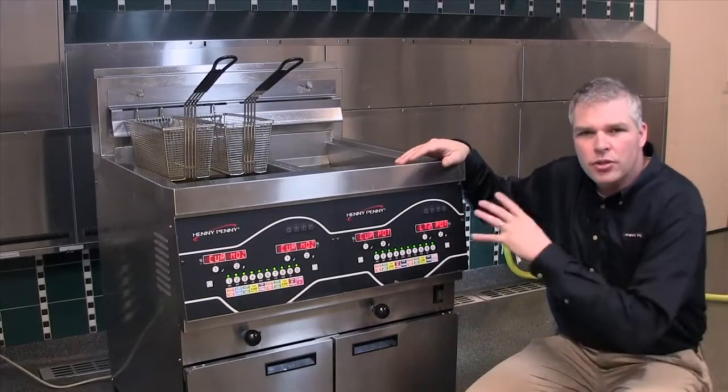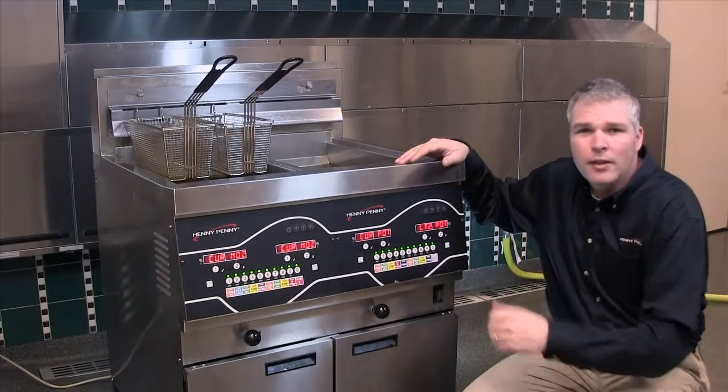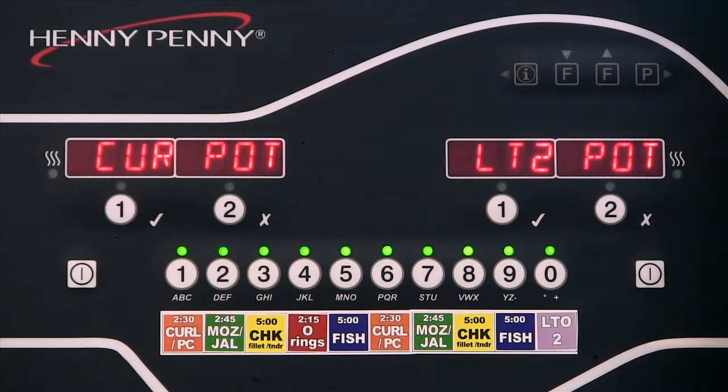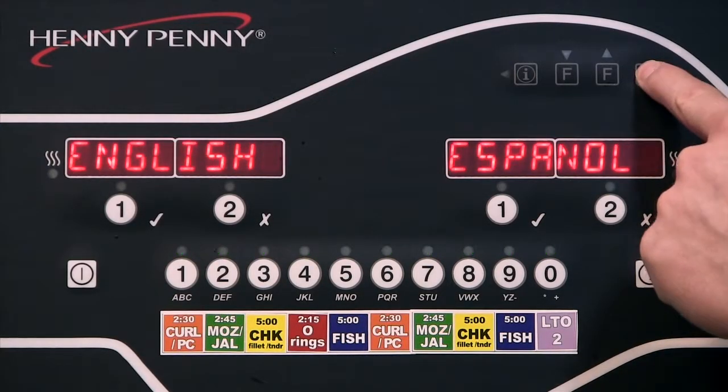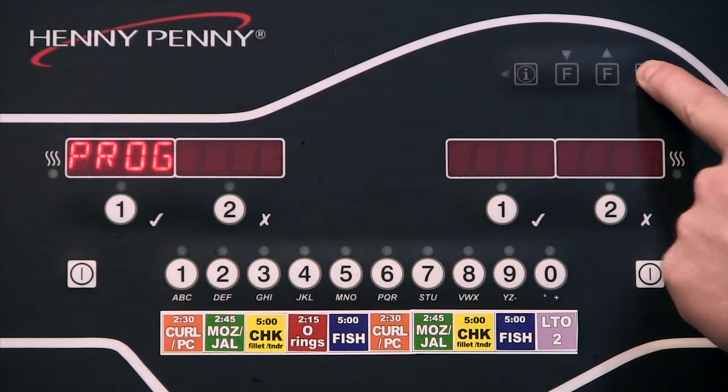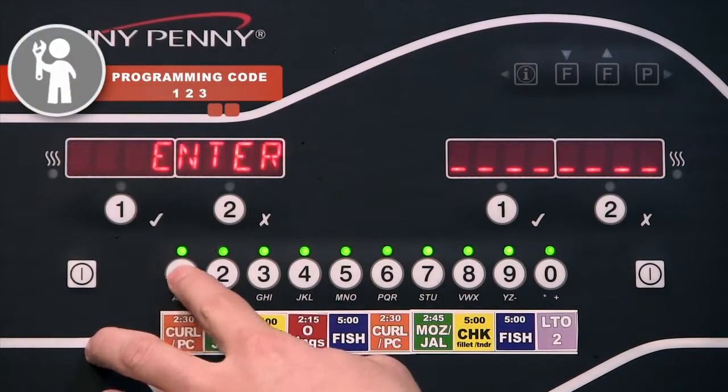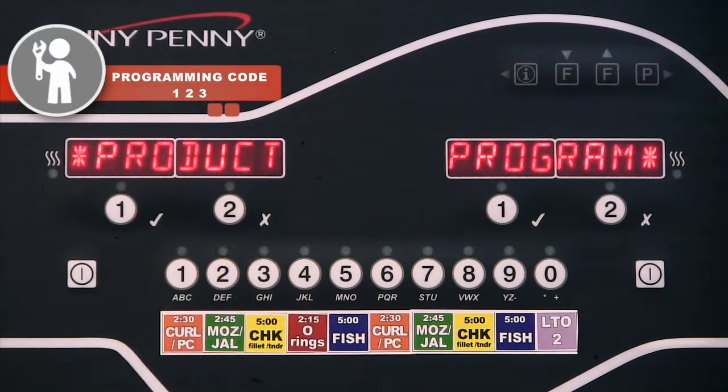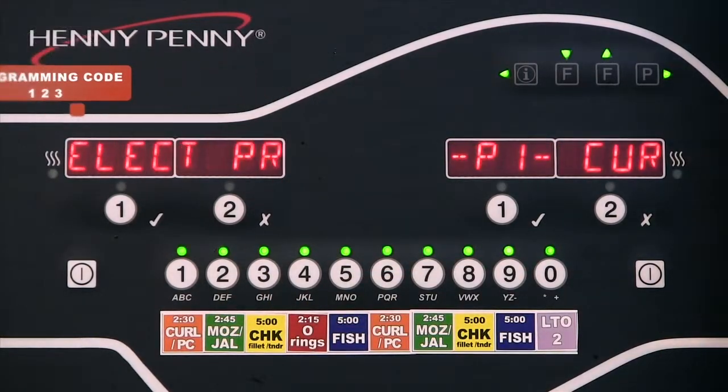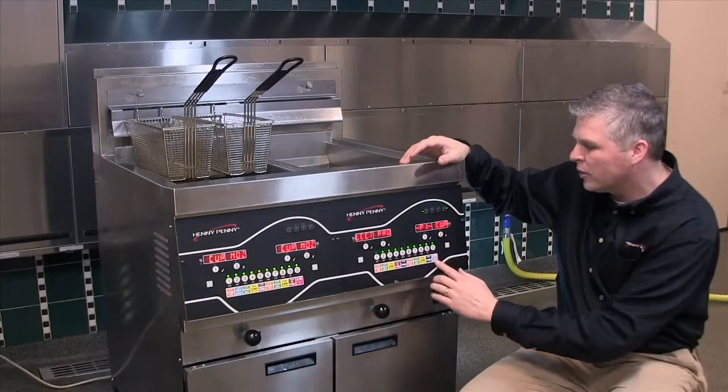Right now I'm going to show you how to change a product time, temperature, and possibly the name. To get into programming, you simply press and hold the P button for programming. Hold it in for about 3 seconds, enter the code 123, and that takes us into product programming.